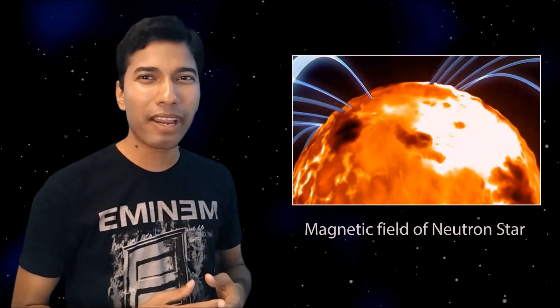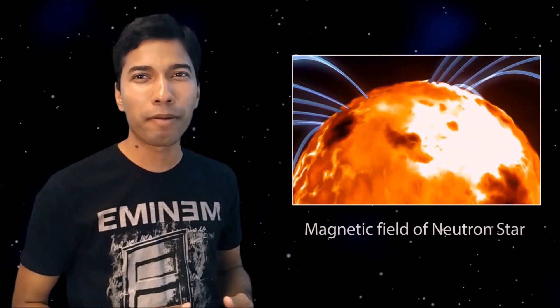This extremely strong magnetic field can erase your credit card from hundreds of thousands of kilometers away. The neutron stars are ridiculously dense. A single cubic centimeter of a neutron star's matter can have a mass of around 400 million tons. If you could squeeze Mount Everest in such high density, then it would fit inside a teaspoon.